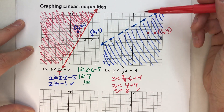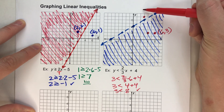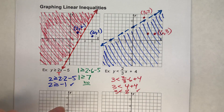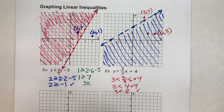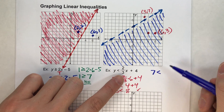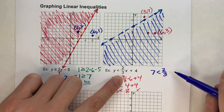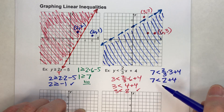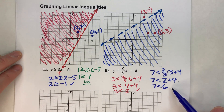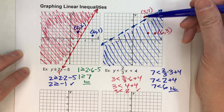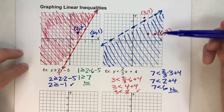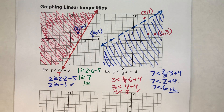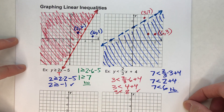Let's pick something else — let's pick 3, 7. Notice this is not in our shaded area. So when we test 3, 7, it should make a false statement with our inequality. Y is 7. Is 7 less than 2 thirds times 3 plus 4? 2 thirds of 3 is 2, plus 4 is 6. Is 7 less than 6? No, it's not — it's bigger than 6. So we know 3, 7 is not part of our solution. It's always good to double check at least one point in each region, just to be sure.